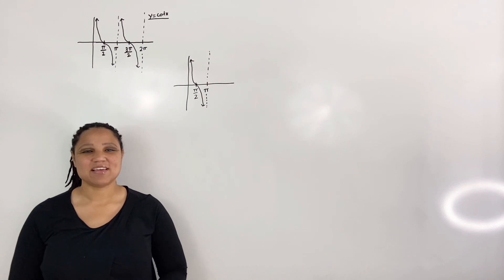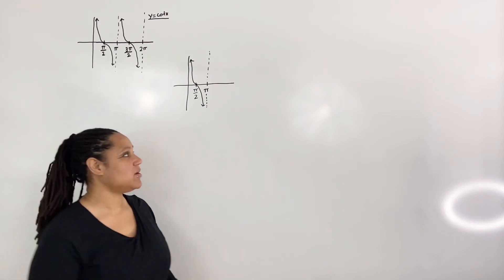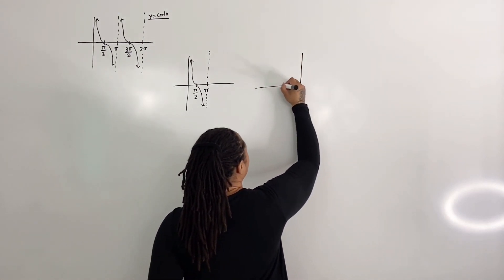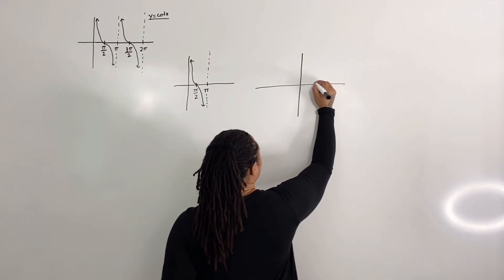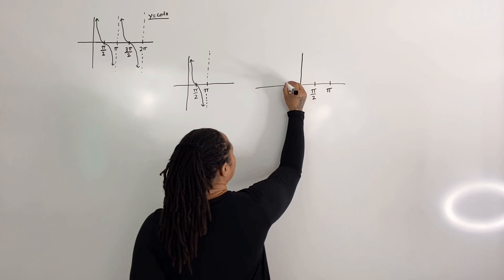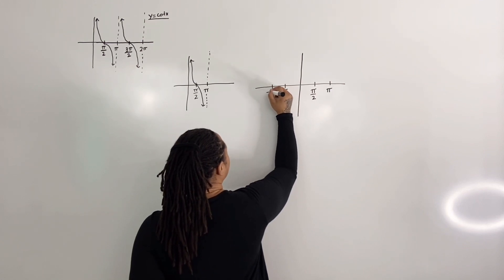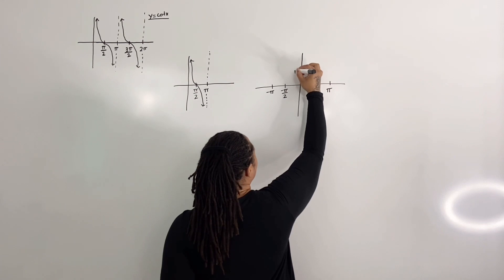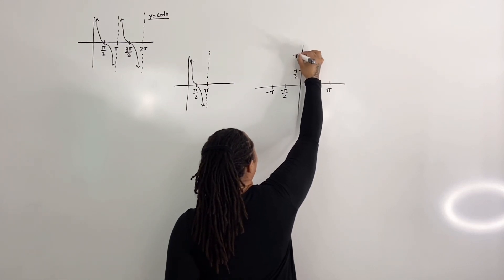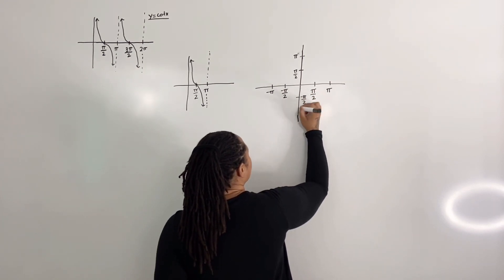The following are the steps for graphing inverse cotangent. Step 1: draw a number quadrant. I'm going to put some points: we have pi over 2, negative pi over 2, and negative pi on the axes.